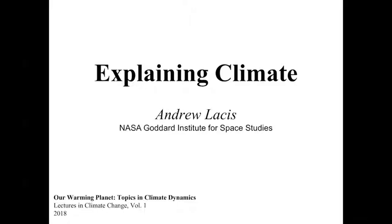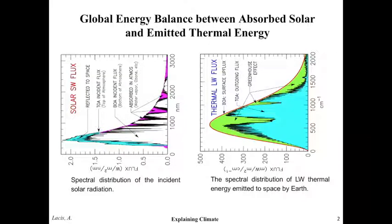The Clausius-Clapeyron relation describes how, in a bell jar with water and air, changing the temperature changes how much water vapor it can hold. This is a more empirical relation. It's a little slower moving than radiation because you have to evaporate water, which takes hours or days. So let's start with the atmospheric radiation.